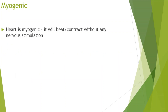So first looking at the heart being myogenic. The heart is myogenic, which basically means that the heart can beat or contract without any nervous stimulation. This means that the heart does not need anything to be able to beat or contract, and it can work on its own.